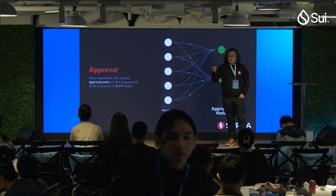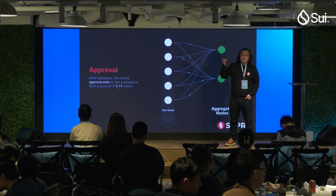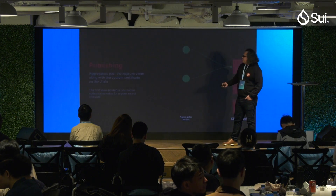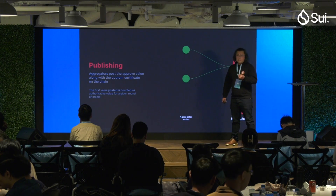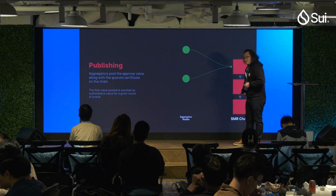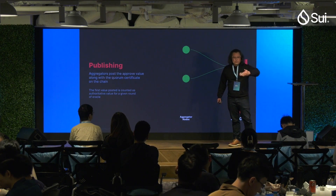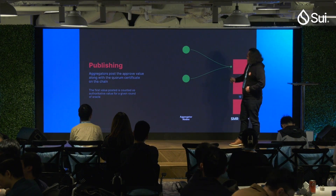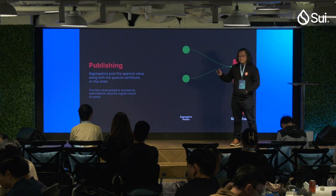Once a clan reaches 51% agreement on the presented value, we ultimately publish this to a blockchain. In Supra's case, we do have a backbone blockchain. SMR — state machine replication — is used as an ordering service to keep things in order and maintain global agreement on the ordering of things. This gives us a very robust system.